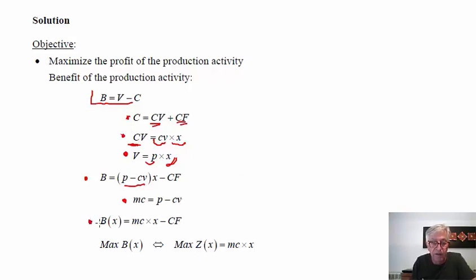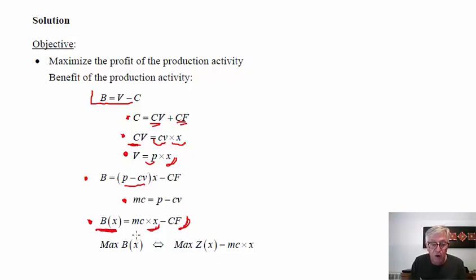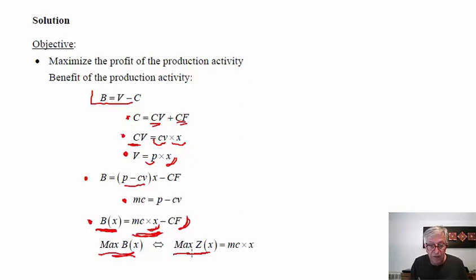With this definition, we can rewrite the benefit as a function of quantity produced plus a constant — the fixed costs. Fixed costs are constant and independent of quantity, for example the depreciation of machines or rent of the building. Mathematically, maximizing the benefit is the same as maximizing the total contribution margin, which is obtained by the product of the unit contribution margin and the quantity produced.